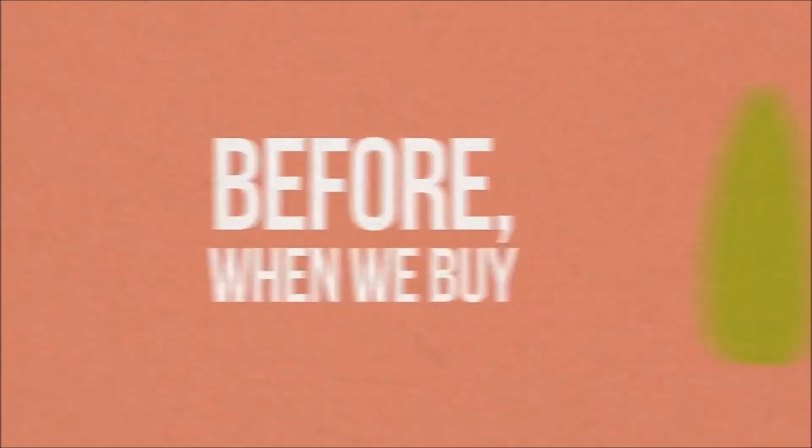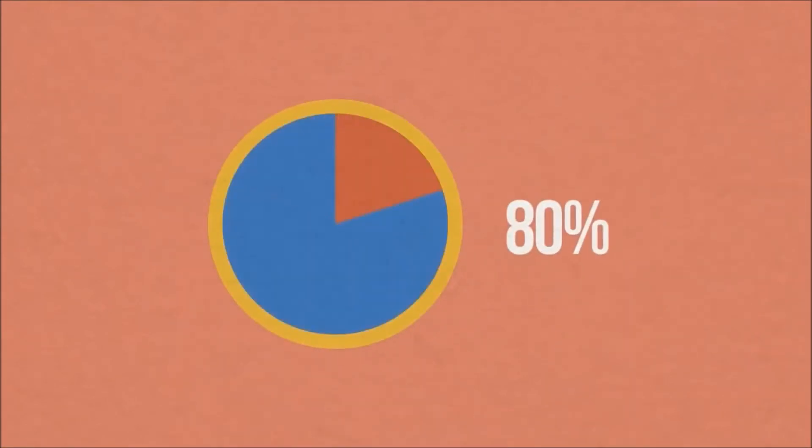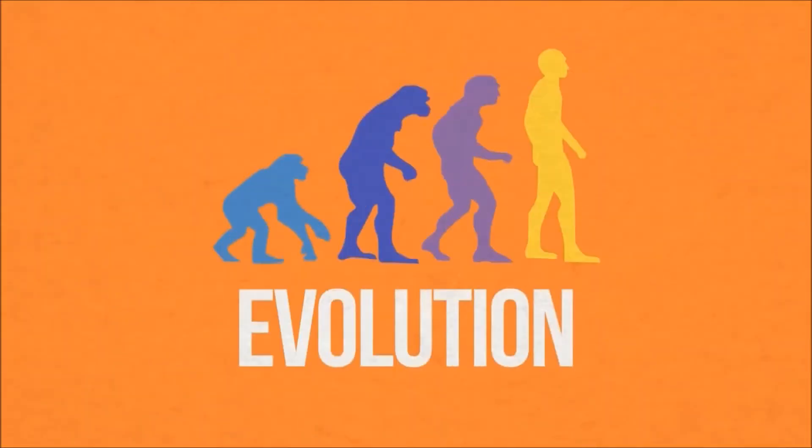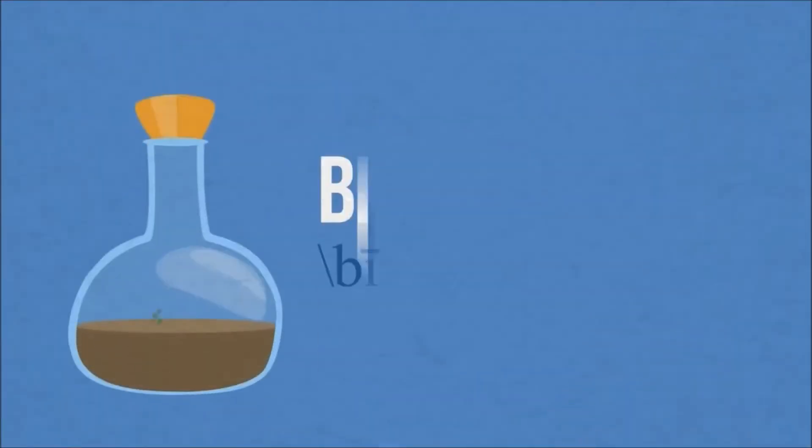Before, when we buy corn, there's an 80% chance that your corn has a worm inside. How did it happen that today's corn don't have worms? It's somehow evolution. But specifically, it's biotechnology.